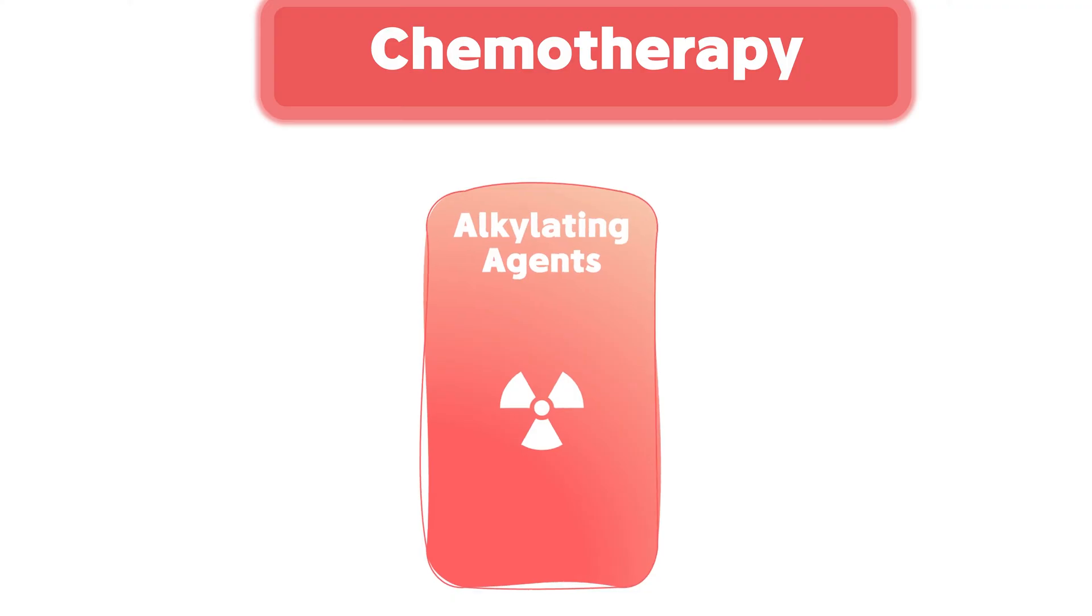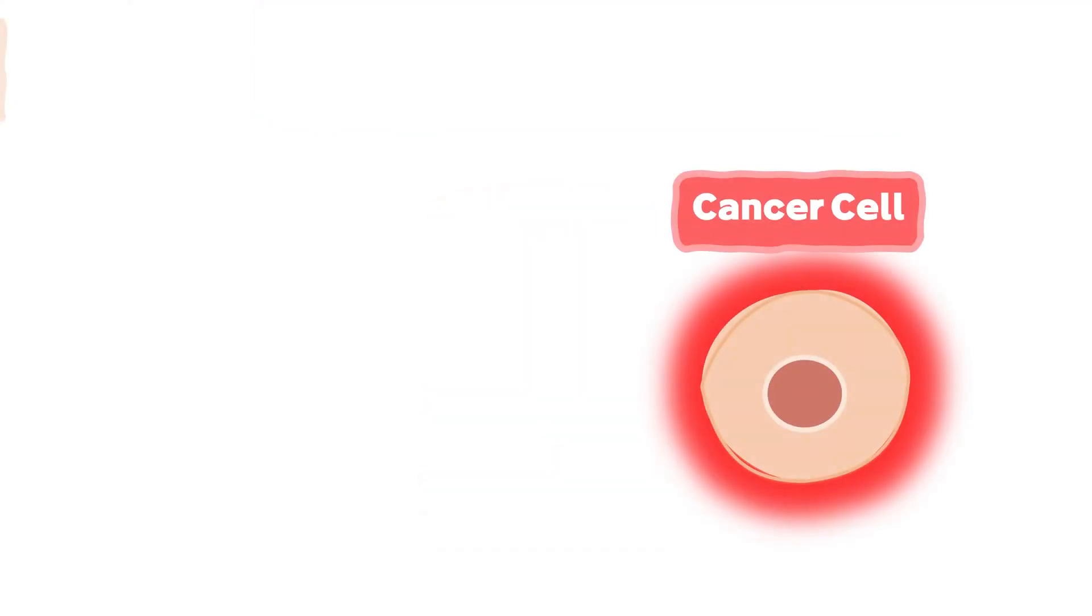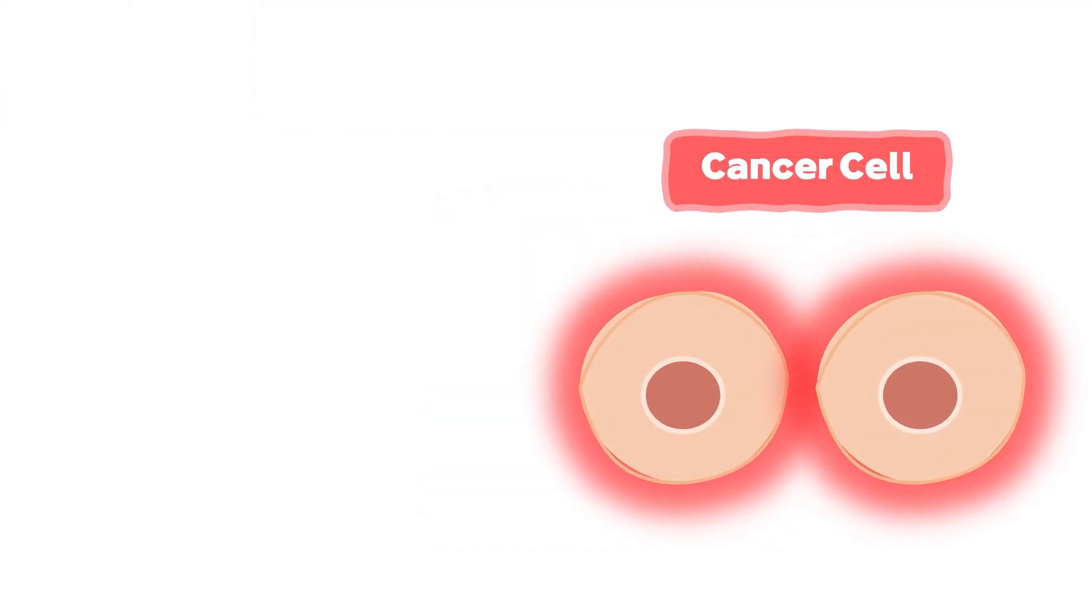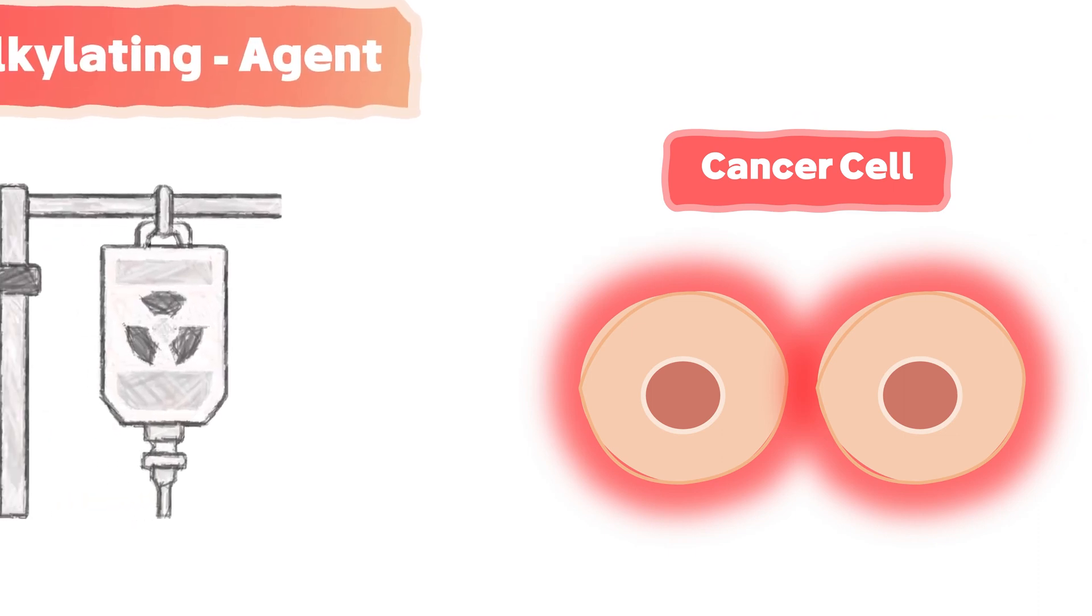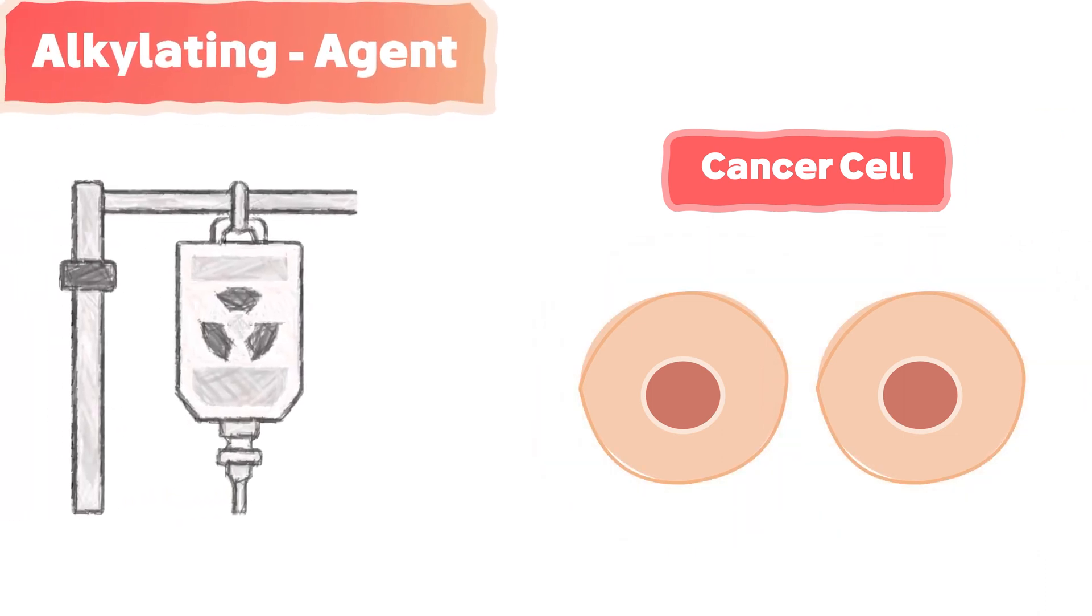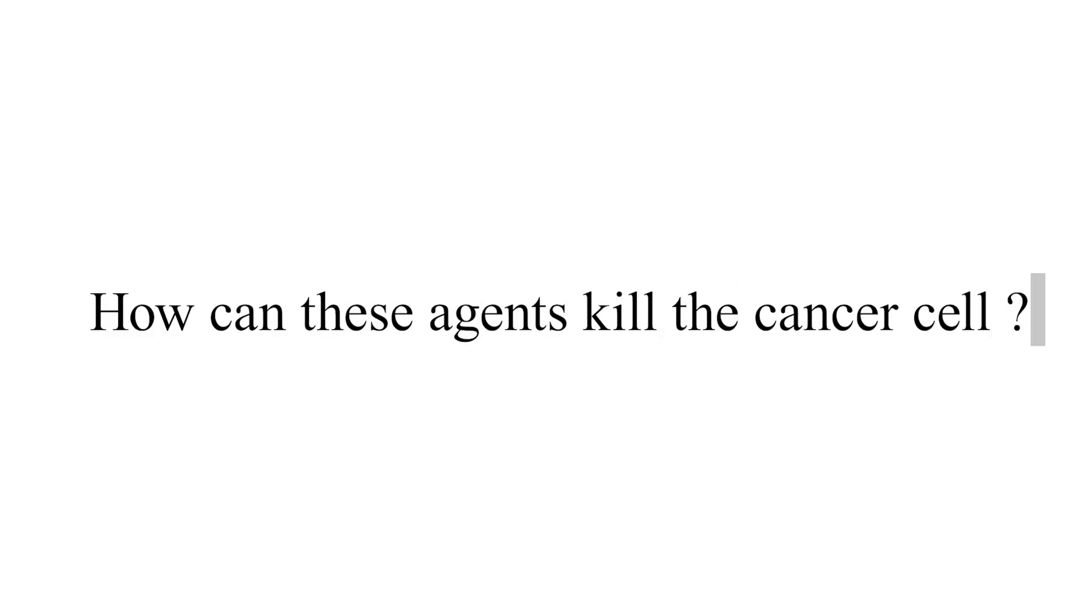Let's explore the function of these agents. Cancer cells are constantly dividing, and the alkylating agent is given to the patient suffering from a tumor to target and kill these cells. But how can these agents kill the cancer cell?